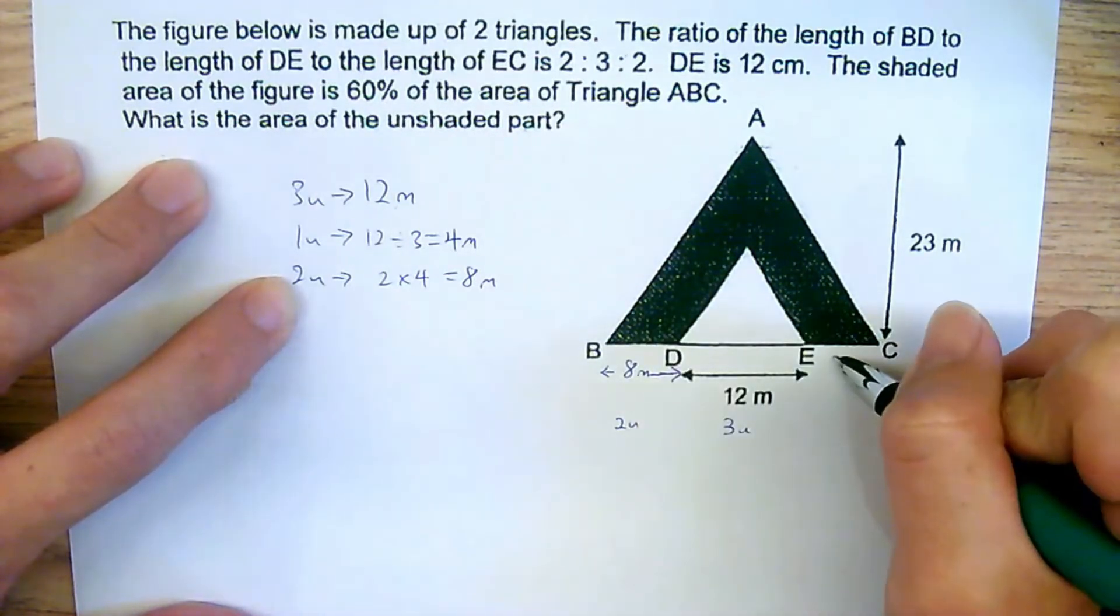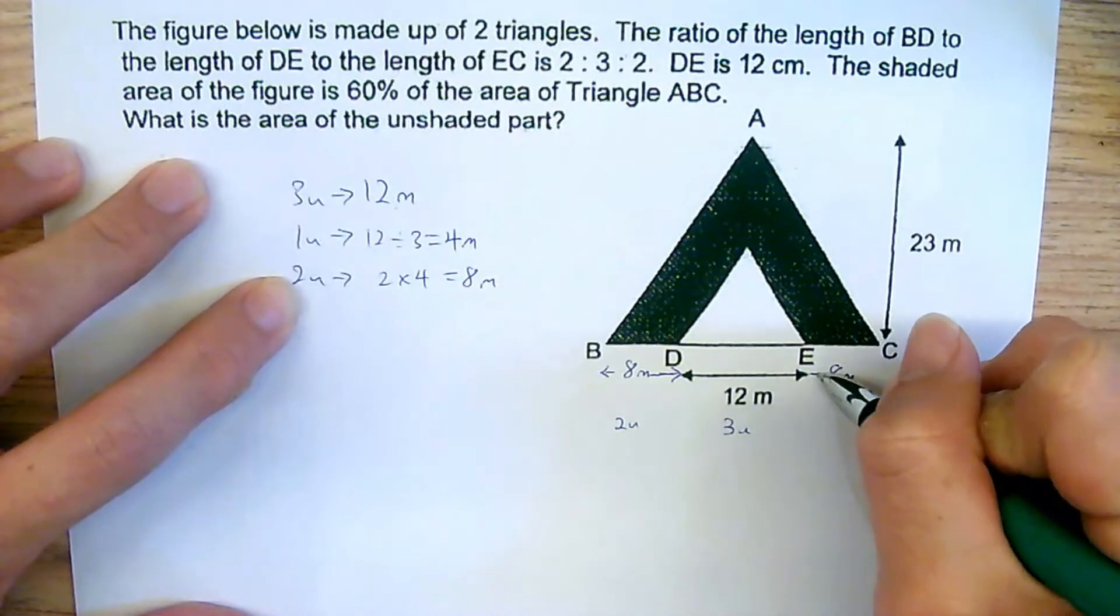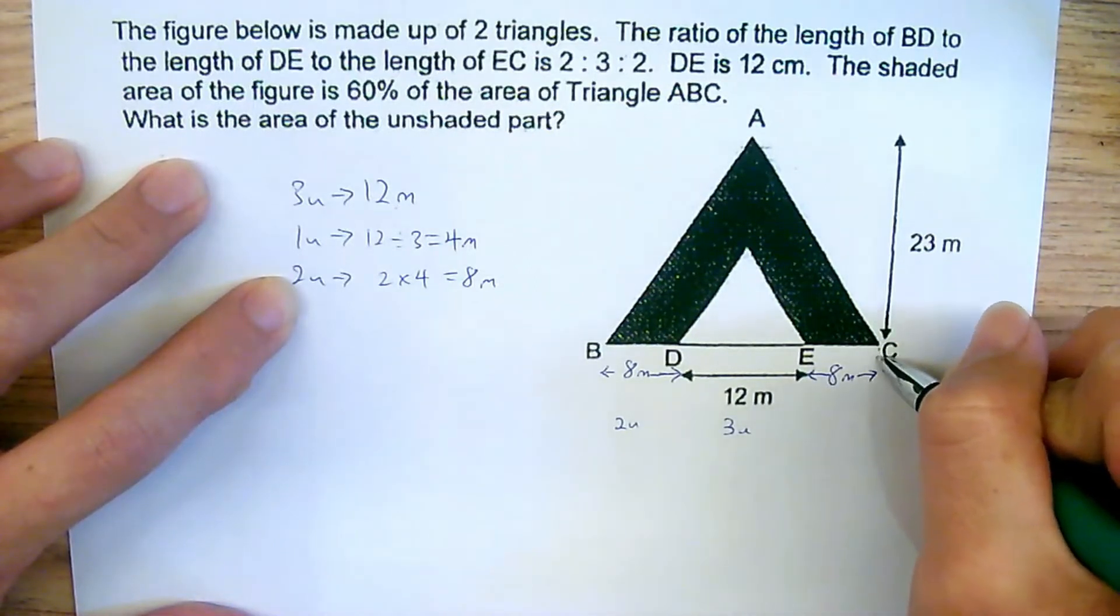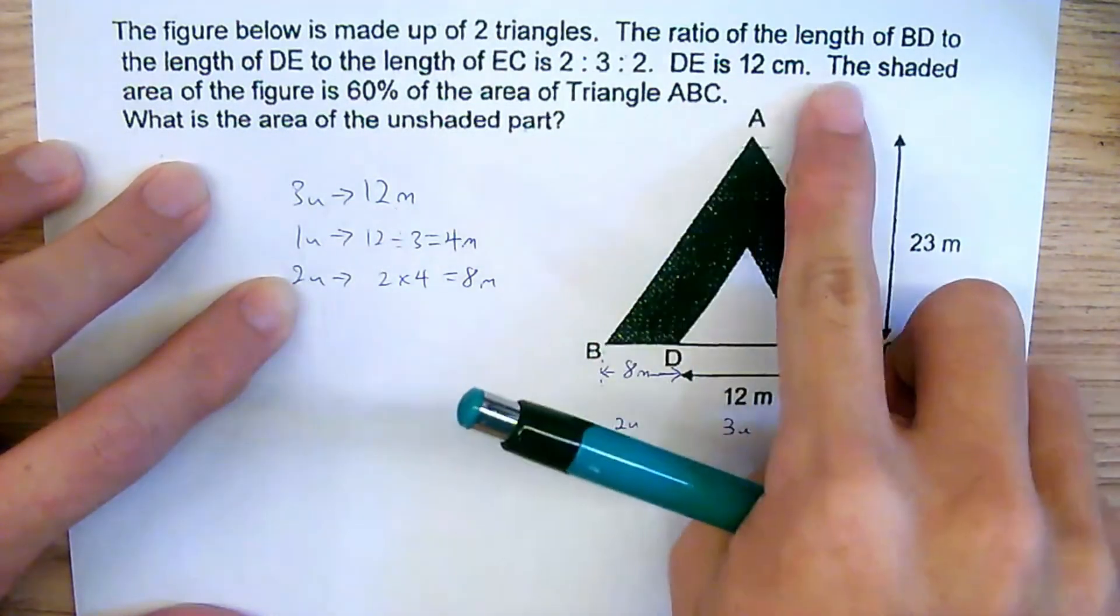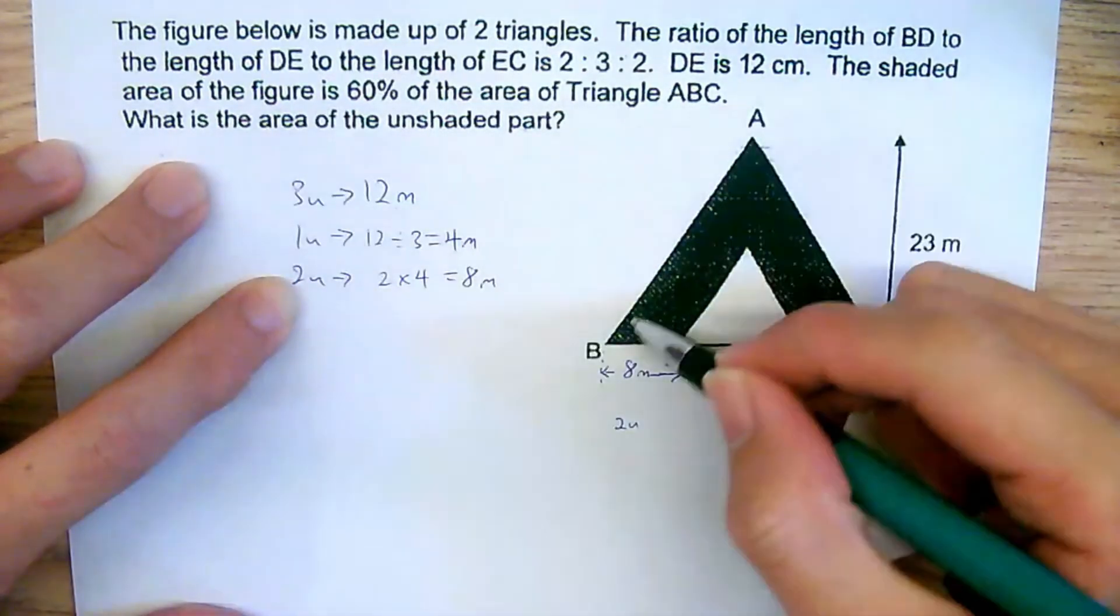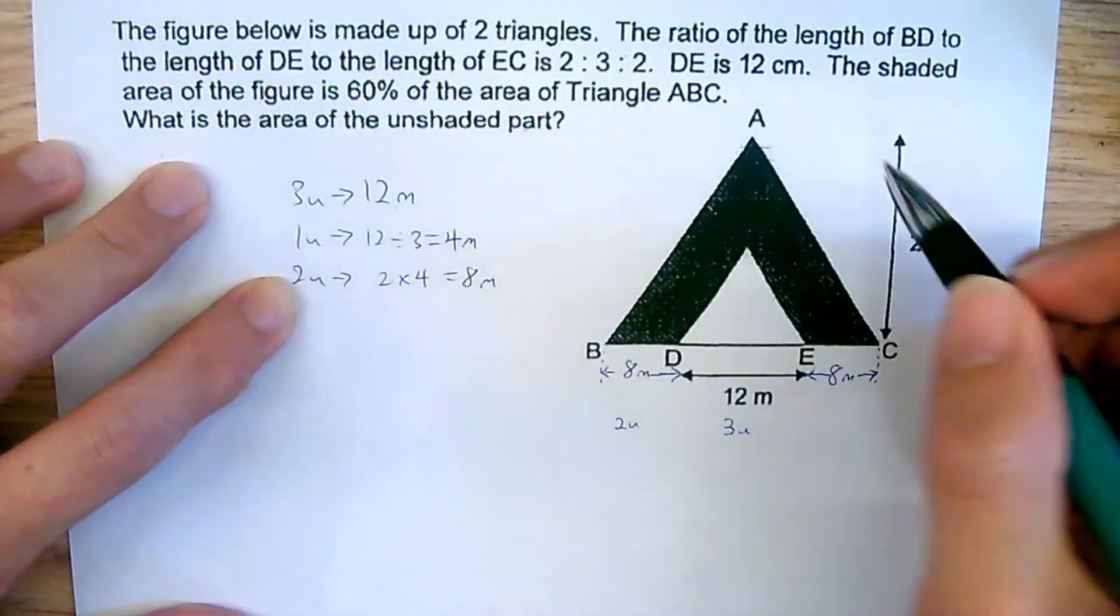Similarly, this will be 8 meters as well if you have read the question properly. Now, they mentioned to us that the shaded area, which is this, is 60% of ABC.